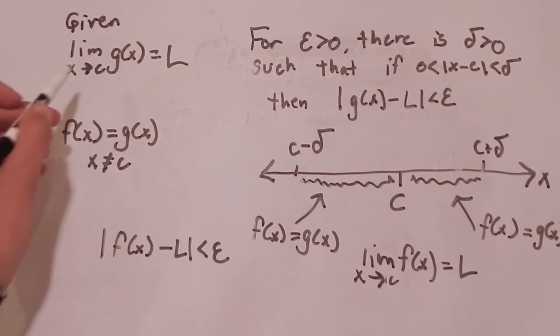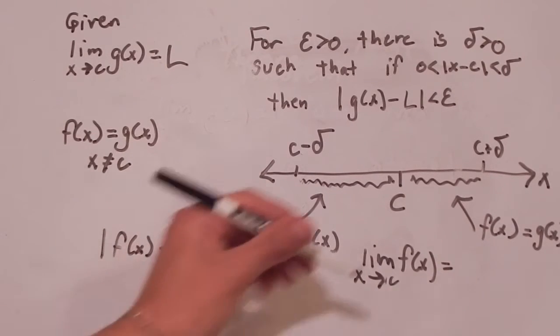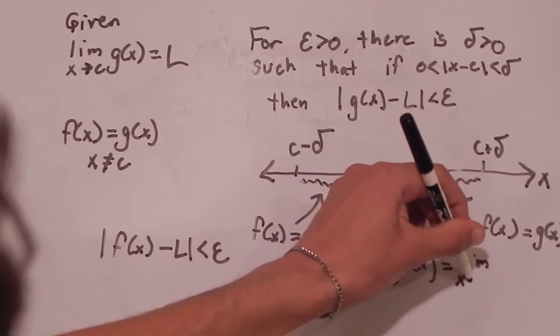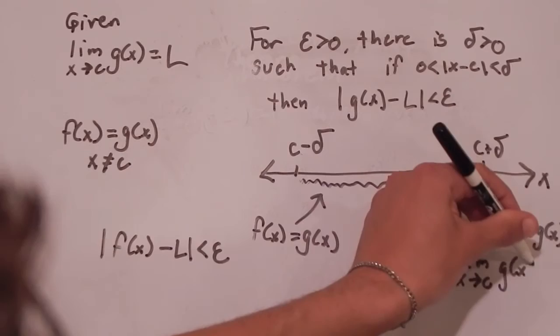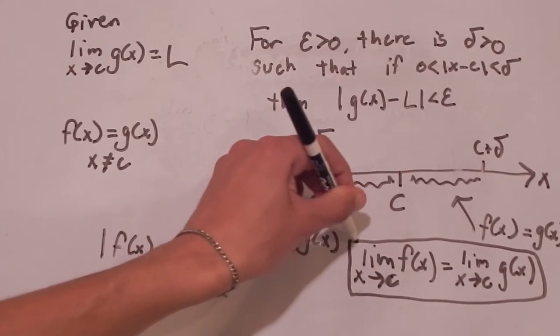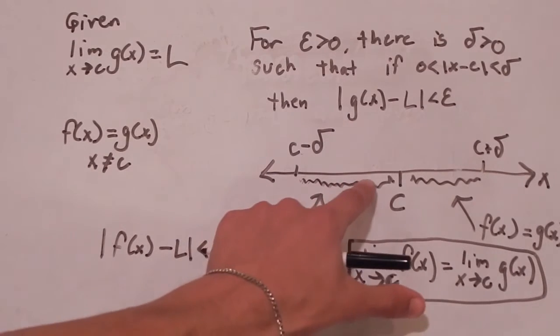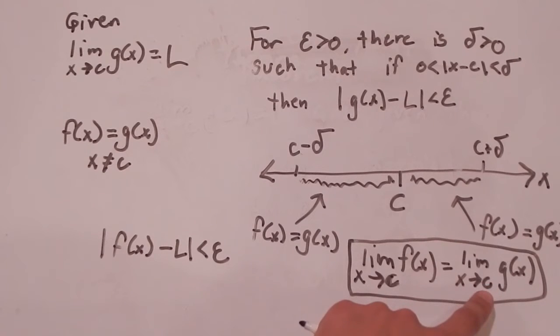But as we know, L is also equal to the limit as X approaches C of G of X. So we can actually take that out and put in the limit as X approaches C of G of X. So this theorem is important because it shows and again reiterates the fact that limits don't care what the value of the function is at C. They don't—it doesn't matter what it is. The only thing that matters are the values around C and what values F of X or G of X is approaching. And this again reiterates that and proves that. So as we've proven by the all-but-one-point theorem, given these two, the limit as X approaches C of F of X is equal to the limit as X approaches C of G of X.